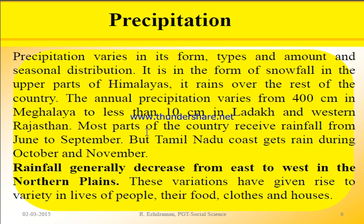Annual precipitation varies from 400 cm in Meghalaya to less than 10 cm in Ladakh and western Rajasthan. Most parts of India receive rainfall from June to September, which is the rainy season. However, the Tamil Nadu coast receives rain during October and November — this is due to the monsoon reversal we will study in detail.